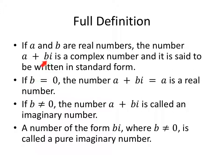If B equals 0, the number A plus Bi, which would then just be A, is any real number. If B is not 0, the number A plus Bi is called an imaginary number. And that's just historically accurate, but it's not what we think of as imaginary today. A number of the form Bi, where A is 0 but B is not, is called a purely imaginary number.